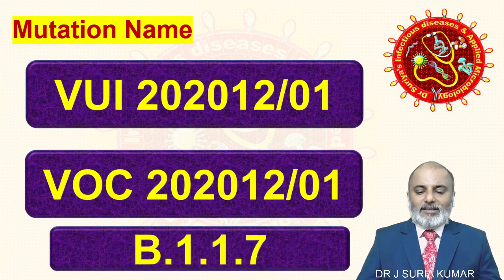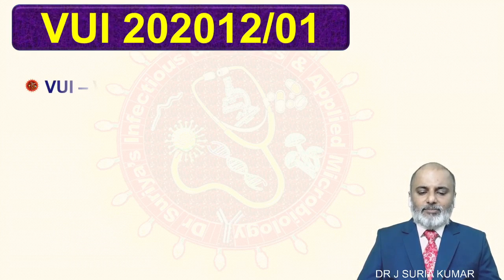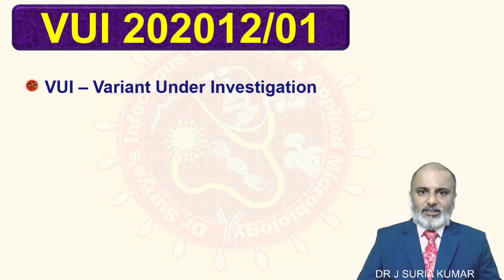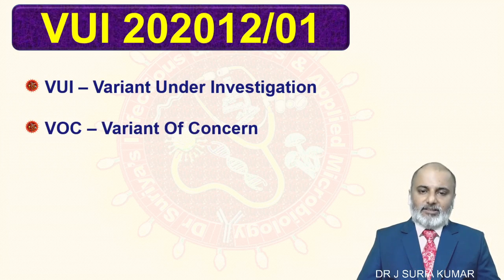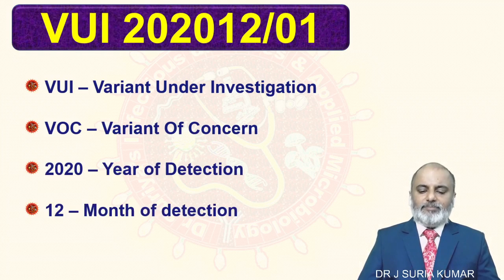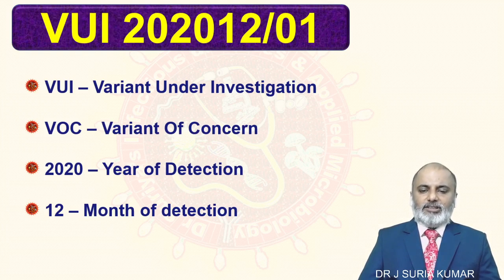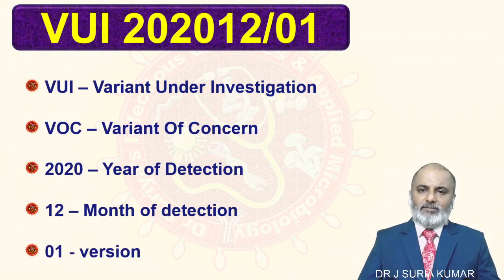What does the nomenclature mean? VUI stands for Variant Under Investigation; it is now called VOC — Variant of Concern. The 2020 means year of discovery, 12 means the month of December — it was circulating from October but officially declared in December — and 01 is the first variant. That is the nomenclature.